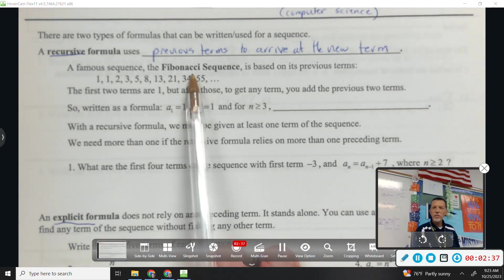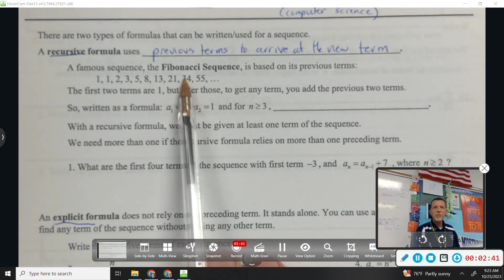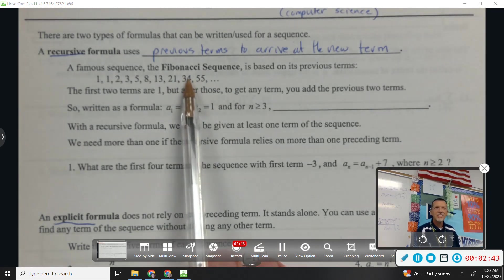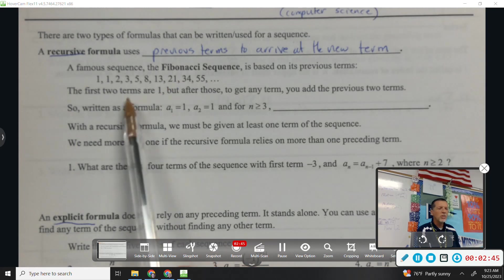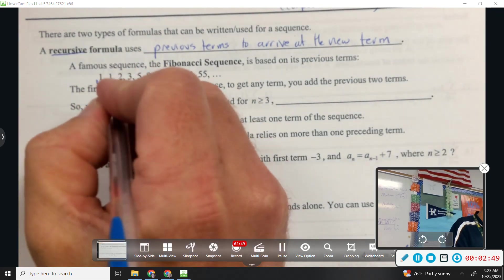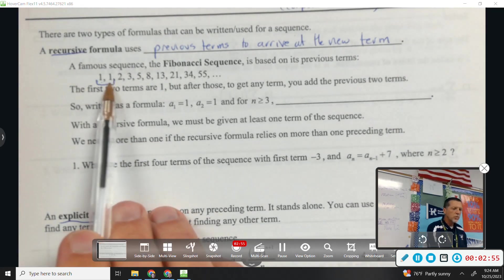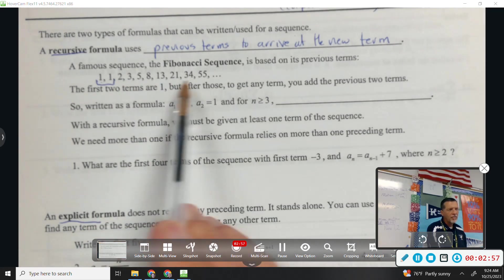I don't know if you've heard of the Fibonacci sequence. Anybody heard of the Fibonacci sequence? Yes. Mostly no. Basically, you start with the two first terms are 1. After that, you add the previous two terms. So 1 plus 1 is 2. 1 plus 2 is 3. 2 plus 3 is 5. And so on.